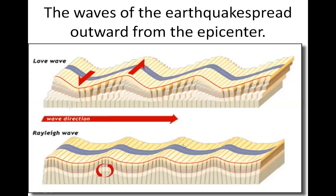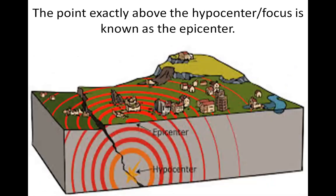The wave of an earthquake spreads outward from the epicenter, and these are the waves which can be felt at the time of the earthquake. The point on the surface of the earth exactly above the hypocenter is known as the epicenter. The intensity of the earthquake is felt the maximum around the epicenter, and decreases as we move away from it.